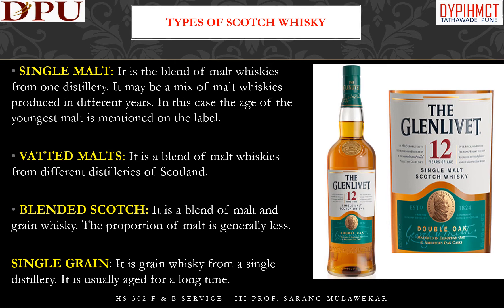Types of Scotch whiskey: Single Malt is the blend of malt whiskeys from one distillery and may be a mix produced in different years — the age of the youngest malt is mentioned on the label. Vatted Malt is a blend of malt whiskeys from different distilleries of Scotland. Blended Scotch is a blend of malt and grain whiskey, with the proportion of malt generally less — it is the most appreciated because of its balanced flavor. Single Grain is grain whiskey from a single distillery, usually aged for a long time.